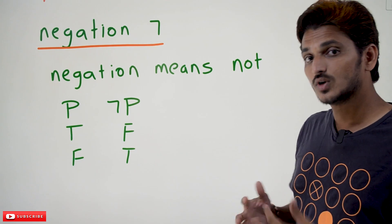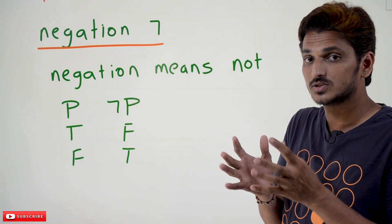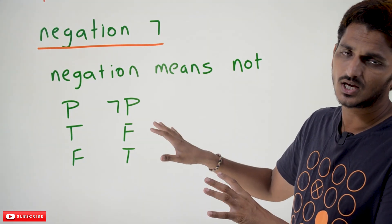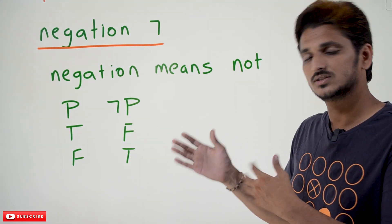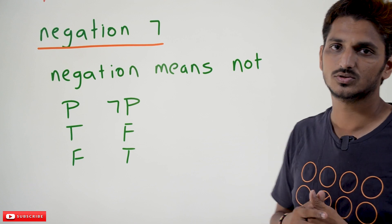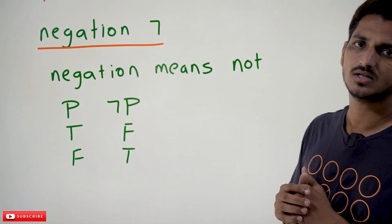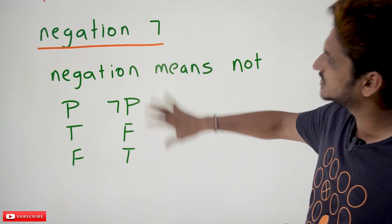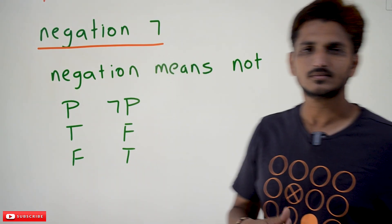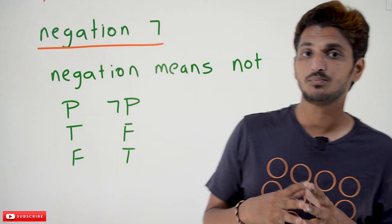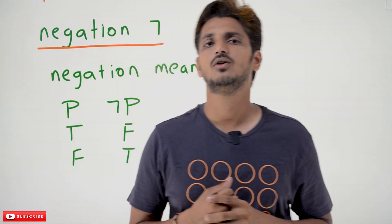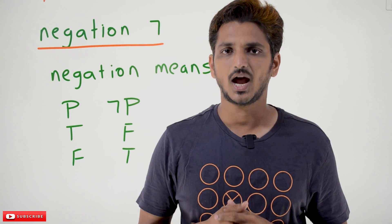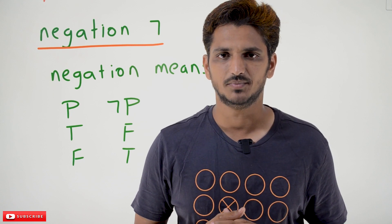In our next class we are going to do some practice examples on how to construct truth tables using these connectives. After that we will discuss more connectives — conditional and bi-conditional — which are very important to understand. Hope you understood these truth tables. If you have any questions, please post them in the comment section below. Thanks for watching, please subscribe to our channel and press the bell icon for the latest updates. Thank you.